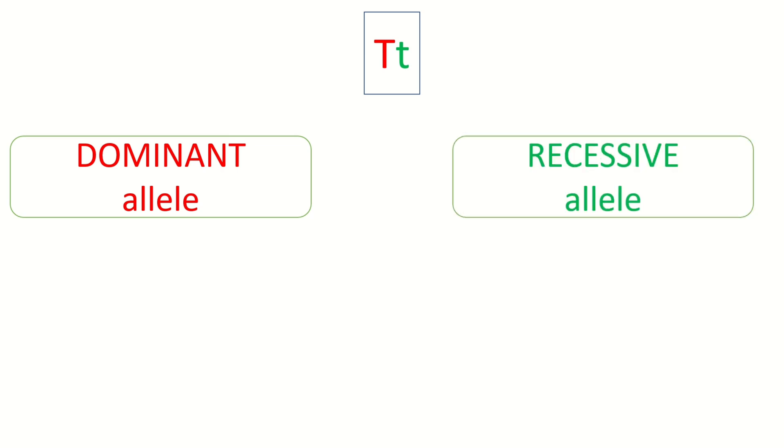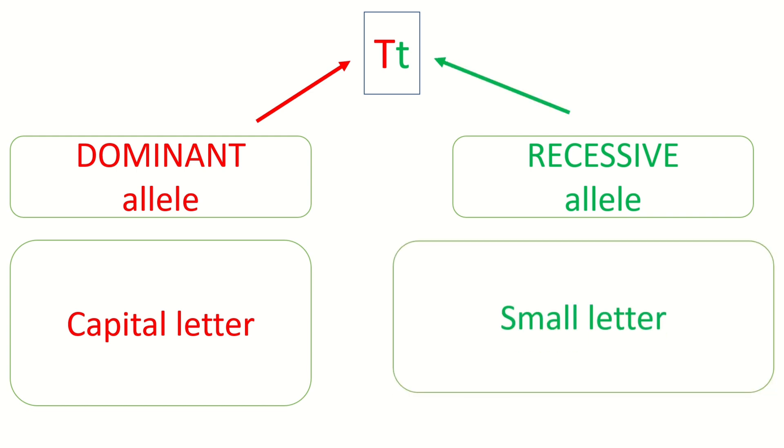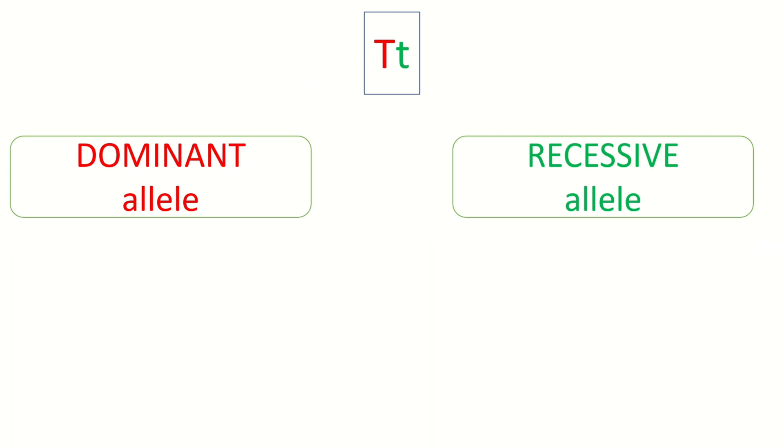Not all versions of a gene are created equal. Some versions are stronger than others. The stronger version is called dominant and the weaker one recessive. Dominant allele is represented by a capital letter. Recessive allele is represented by a small letter.